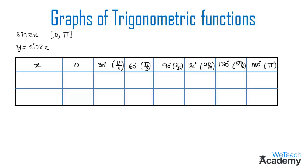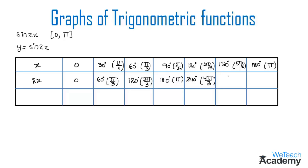In the second row we are going to find the values for 2x, which is simply 2 times each x value. So: 2×0 = 0, 2×30° = 60° (pi by 3), 2×60° = 120° (2 pi by 3), 2×90° = 180° (pi), 2×120° = 240° (4 pi by 3), 2×150° = 300° (5 pi by 3), and 2×180° = 360° (2 pi).